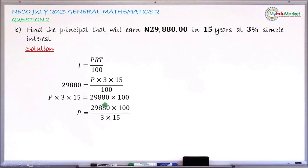After doing the multiplication at the numerator and denominator and dividing the two results, if you did correctly, you get 66,400. This is the principal that will generate 29,880 Naira in 15 years. This is the answer to the question.